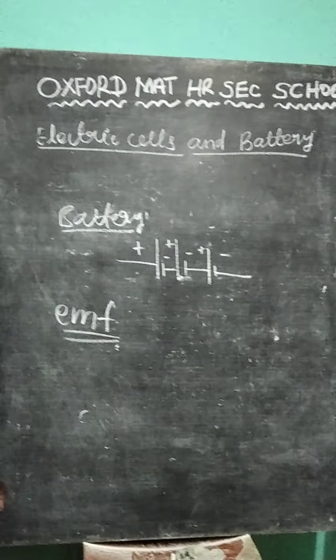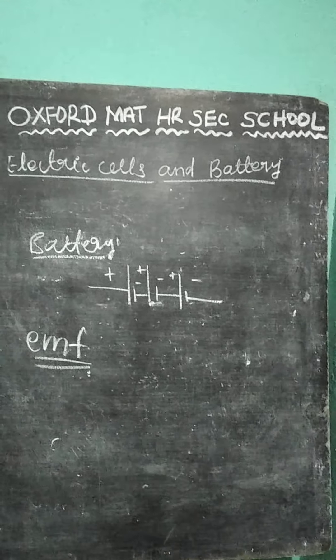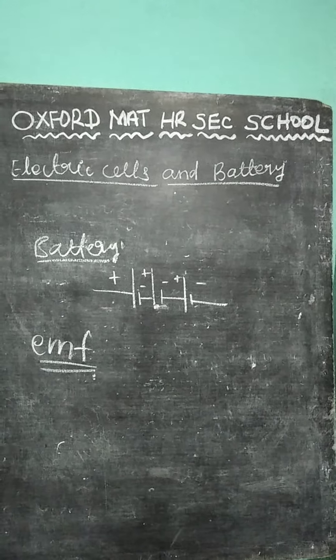Next, battery. So, what is mean by battery? Difference between cell and battery. Two or more cells connected in series that is act as a battery.